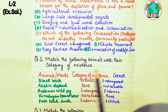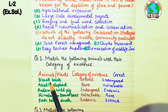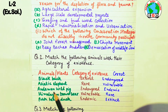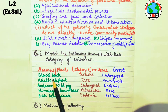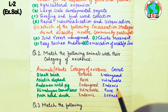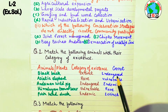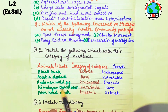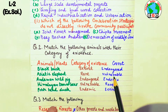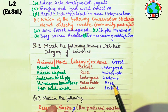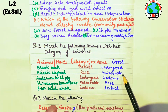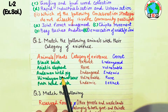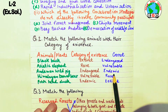Question: match the following animals with their category of existence. Black buck — endangered species. Endangered means species that could become extinct. Asiatic elephant — vulnerable, meaning its population is declining and it could become endangered in the future. Andaman wild pig — endemic, meaning it is indigenous and found only in a local area.